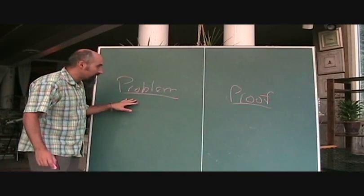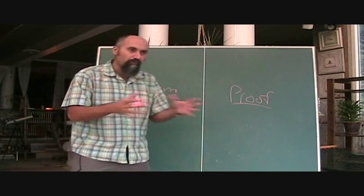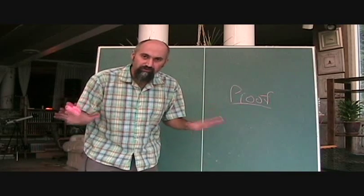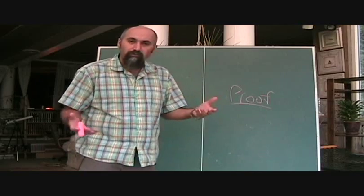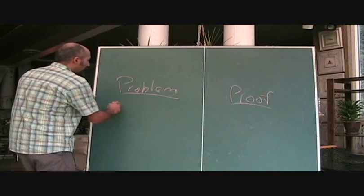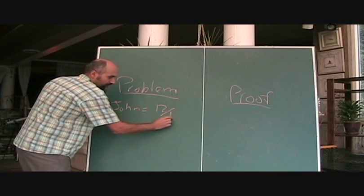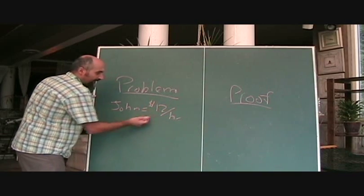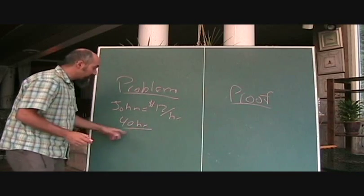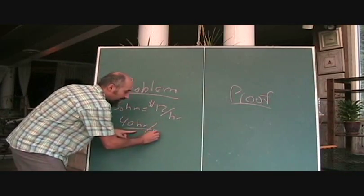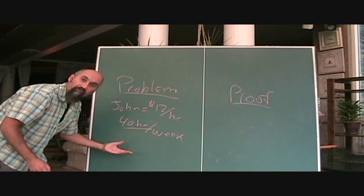With problems, the way they lay them out is basically English. They use words to lay out a problem and ask you to solve for a certain variable. For example, a question would be: John gets $12 an hour, and if he works 40 hours—40 hours per week—how much would he get paid for a 5-day week?